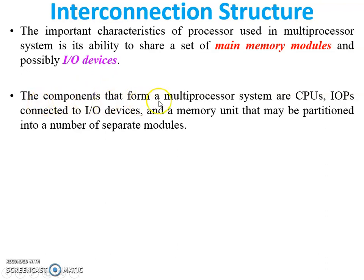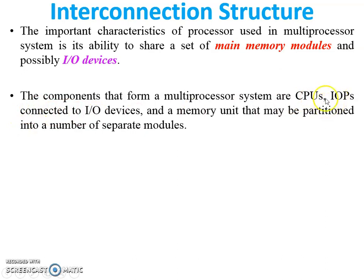The components that form a multi-processor system are CPUs, IOPs connected to I/O devices, and a memory unit that may be partitioned into a number of separate modules. All CPUs are connected to I/O devices through IOP connections, and the memory unit is shared by all the CPUs.